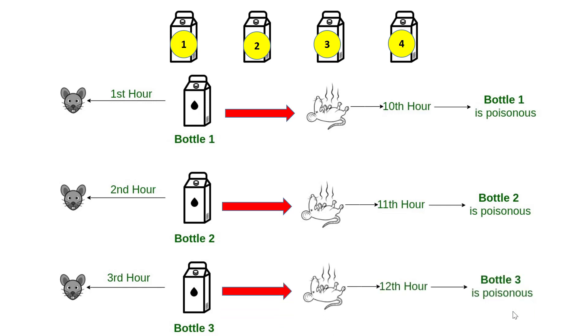If rat dies after 12 hours, third bottle contains poison, because third bottle was fed to the rat at the start of third hour. 2 plus 10 which is 12. Hence, if rat dies after 12 hours, third bottle is poisonous.